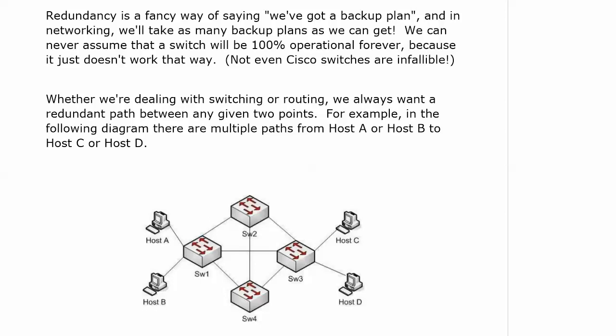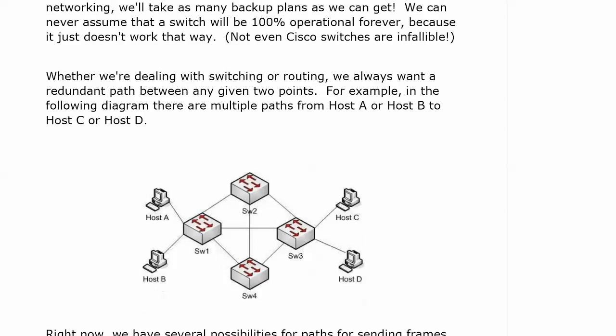You hardly even hear about single points of failure anymore because we've got so many great tools to avoid them, but years ago you heard about it all the time — if the switch goes down, the whole network goes down. Obviously that is not acceptable in today's networks. So what we have is a switched network setup where there are multiple paths for any one host to get to another host, so if one switch — or even two switches — go down, we still have paths for hosts to send each other data.